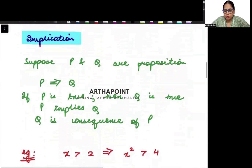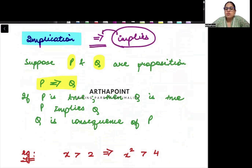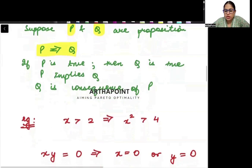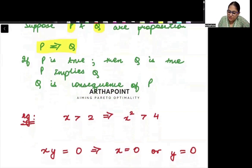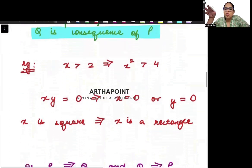Now try to understand implication. Implication means, suppose I take two statements, two propositions. Ek proposition P le liya, ek Q le liya. Then when I say P implies Q, dekho samjho, this means implies. This sign means implies. So when I am saying P implies Q, iska kya matlab hai? This means that whenever P will be true, then Q will also be true. Kyunki P ki wajah se Q hai. Toh agar P ho gaya, toh Q toh ho hi jayega. So P implies Q means, when P is true, Q will be true. It is also the meaning, that Q is a consequence of P.